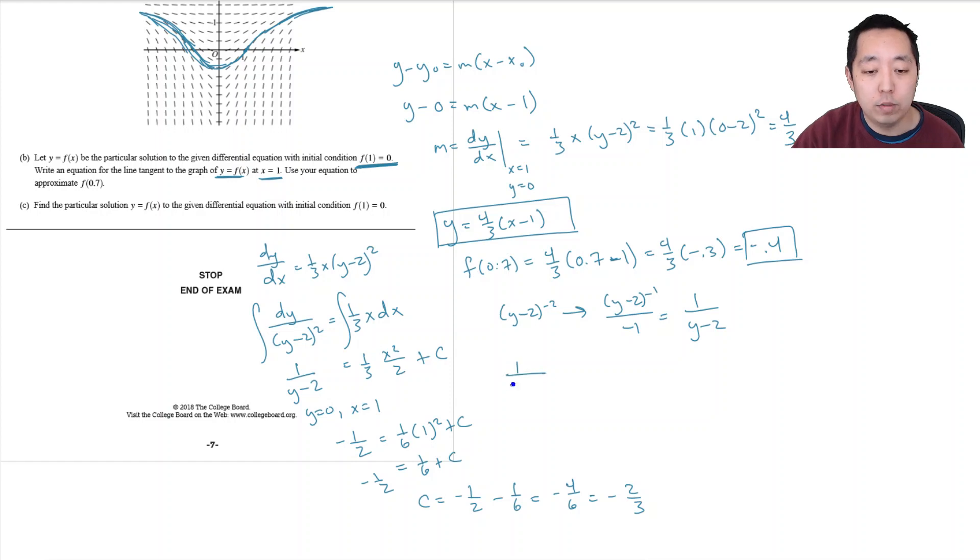So I have negative one over y minus two is equal to one sixth x squared plus one third. So I might multiply through both sides of the equation by six to just get rid of all the fractions. So I have negative six over y minus two is equal to x squared plus two.